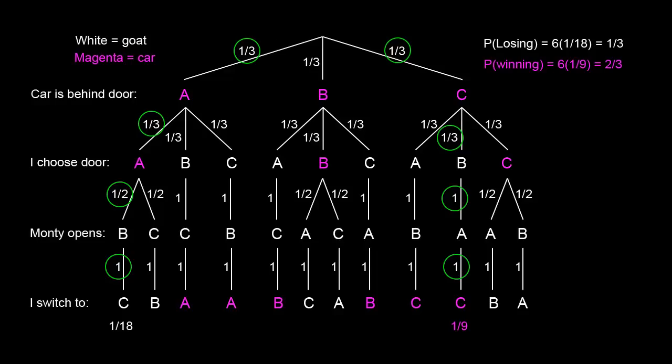So by switching, we improve the probability of winning from one-third to two-thirds, which is quite dramatic.